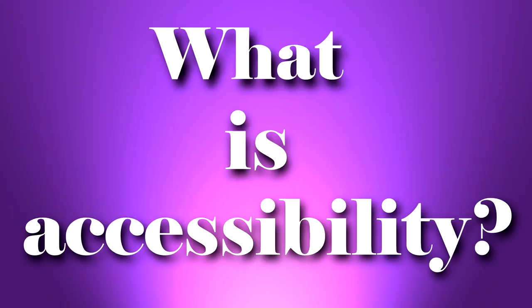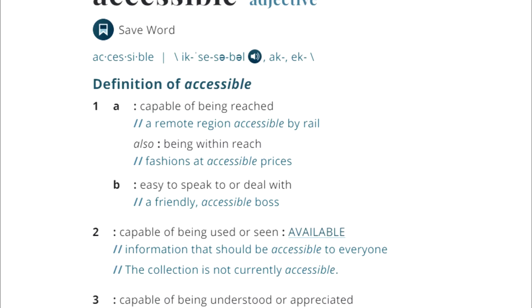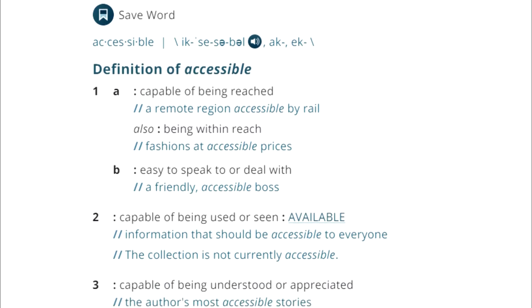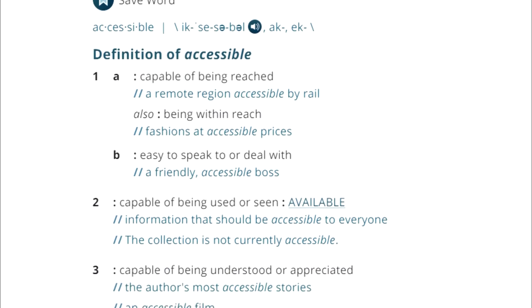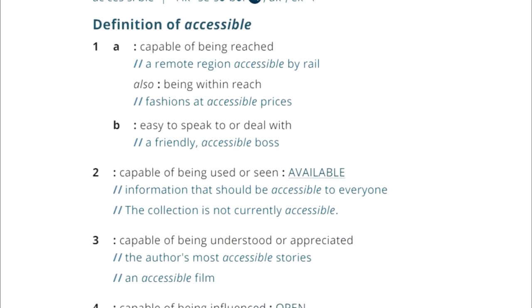What is accessibility? According to Merriam-Webster, it is the state of something being available or capable of being reached. In simpler terms, accessibility is just making our world and events available for the widest range of people possible.